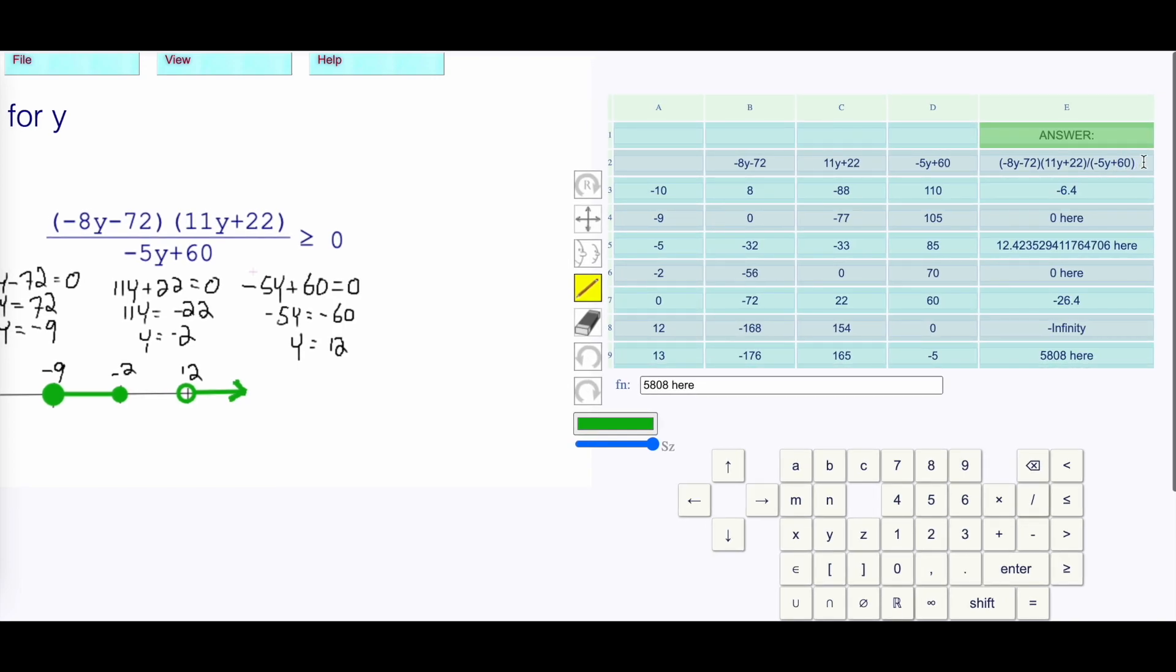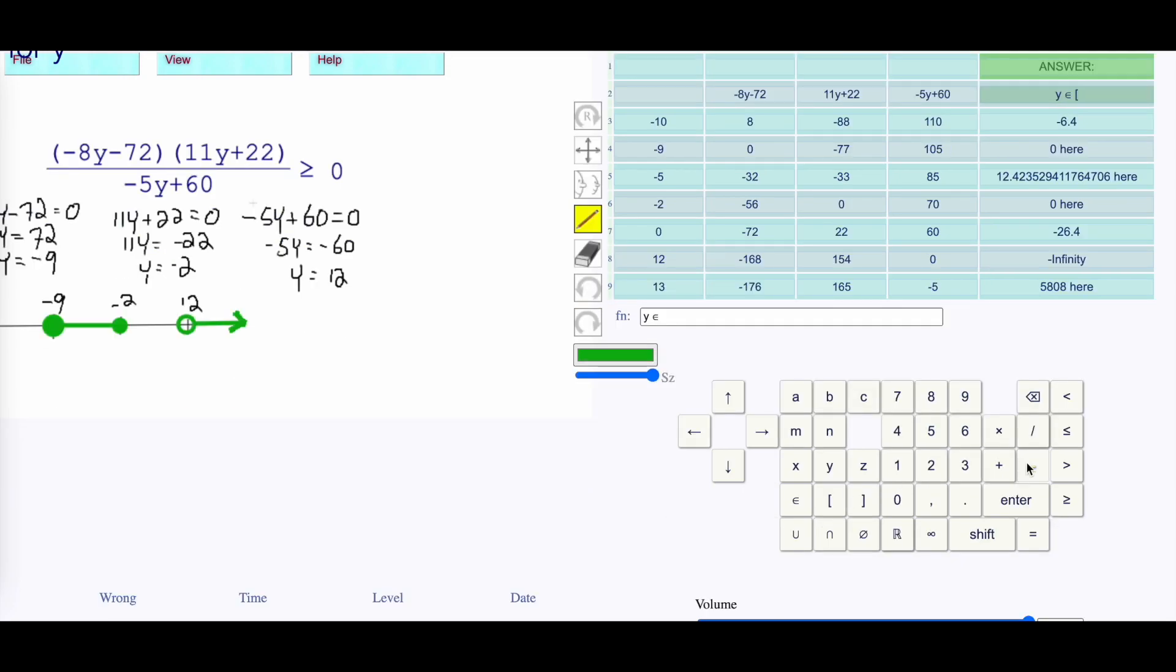Our interval is, which I've foolishly written that in the answer, it's just I didn't have any room, so I have to erase that. Y is a member of the -9's included, so accept a bracket on -9, all the way up to -2, and accept a bracket on the -2. Union. Then from 12 on, so reject a bracket on the 12 because the 12 is not included, to infinity. And then always reject a bracket on the infinity.